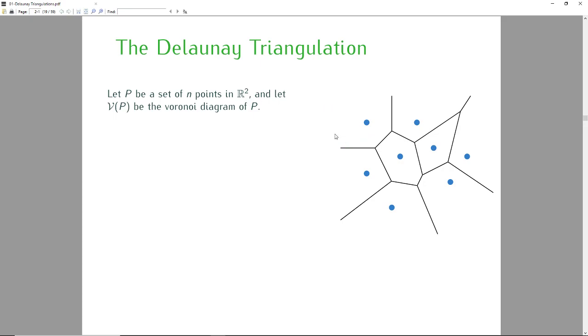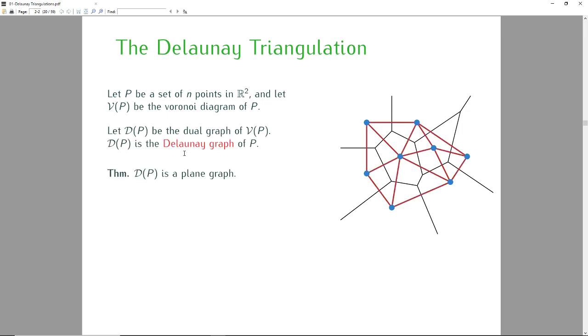So how do we go from a Voronoi diagram to the Delaunay triangulation? We go through a concept known as a dual graph. We have seen geometric duality, but we have not seen graph duality.